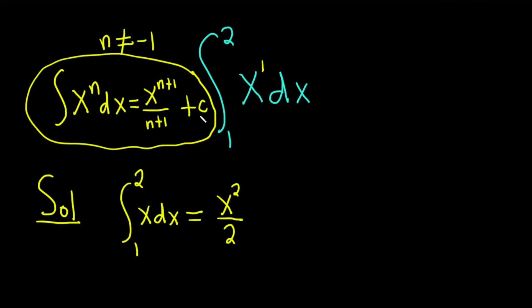Now this is a definite integral, so we don't have to write the plus C. Instead, what we do is we draw a little bracket and put a 1 and a 2.